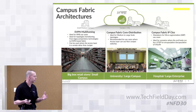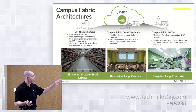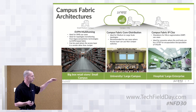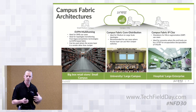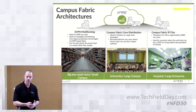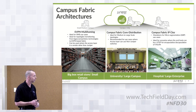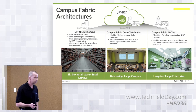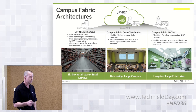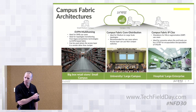This slide re-describes the previous architectures. EVPN multi-homing, core distribution, and campus fabric IP Clos are all EVPN VXLAN constructs, just depending on where they sit in the network. What's nice about the first two is the access layer switches don't change. Campus fabric IP Clos is mandatory for group-based policy — if you're extending VXLAN down to your access layer, that's where GBP tagging begins. So if the customer is interested in micro-segmentation, campus fabric IP Clos is the answer.